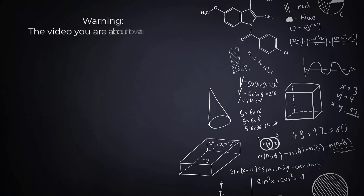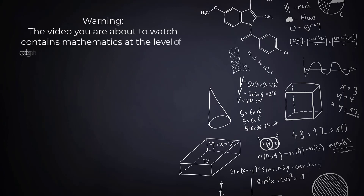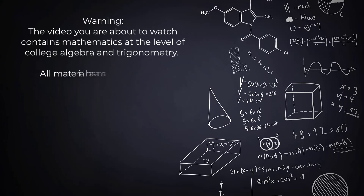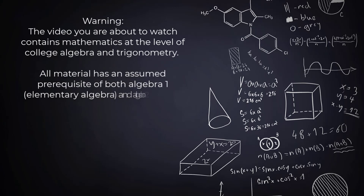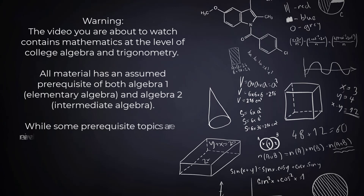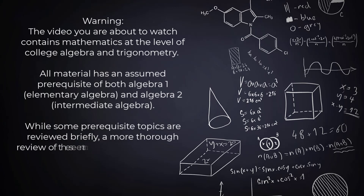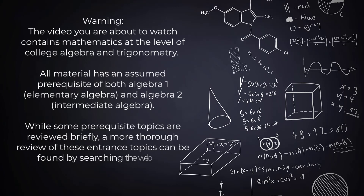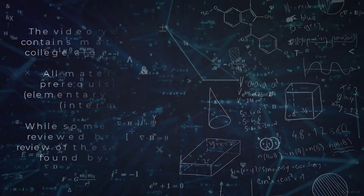Warning! The video you're about to watch contains mathematics at the level of college algebra and trigonometry. All material has an assumed prerequisite of both Algebra 1, which is Elementary Algebra, and Algebra 2, which is Intermediate Algebra. While some prerequisite topics are reviewed briefly, a more thorough review can be found by searching the web.